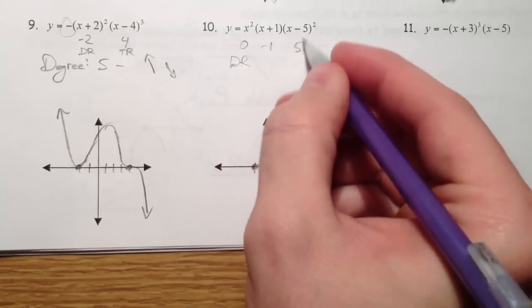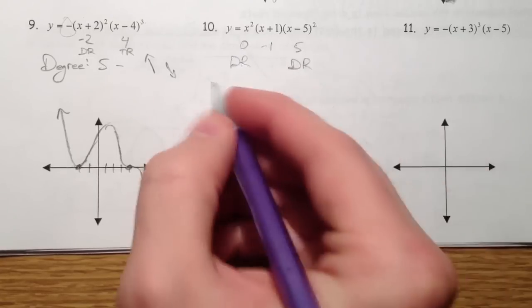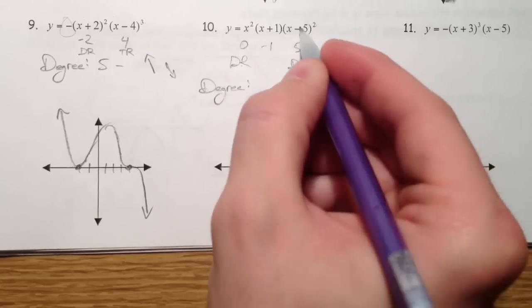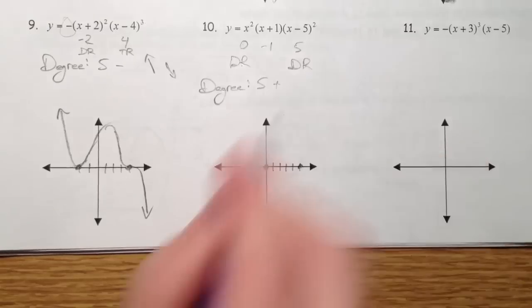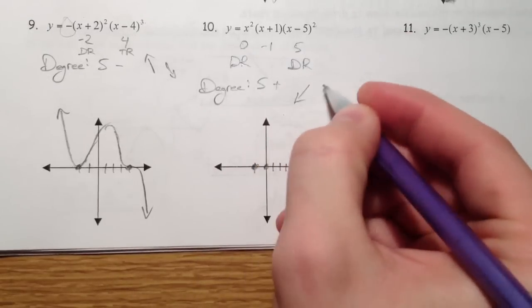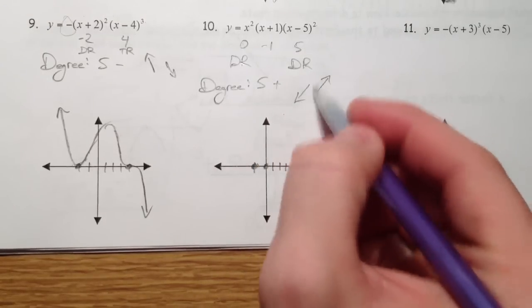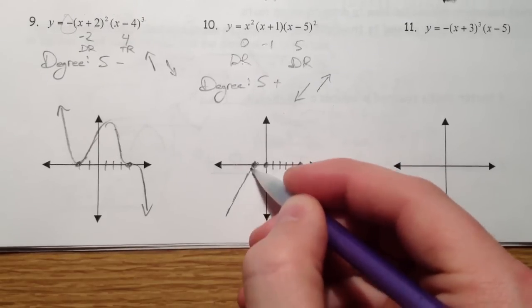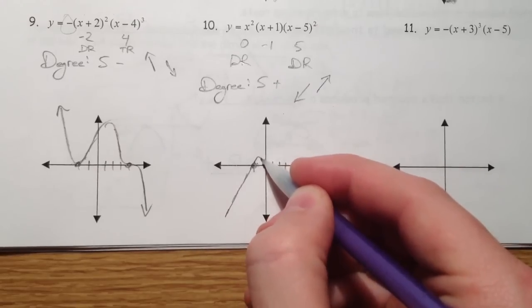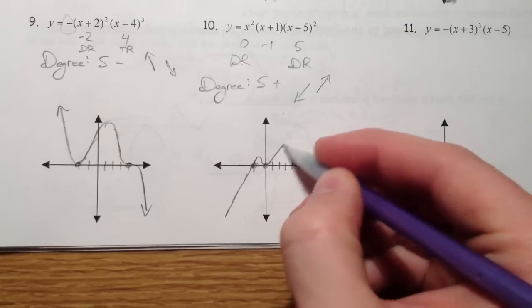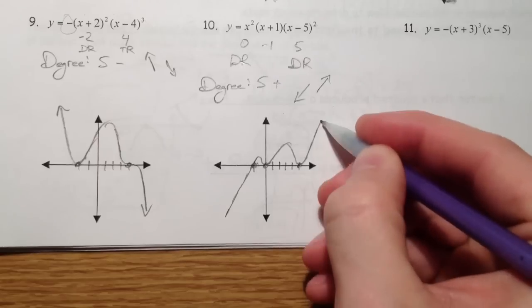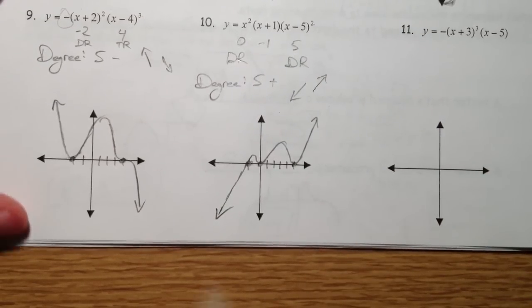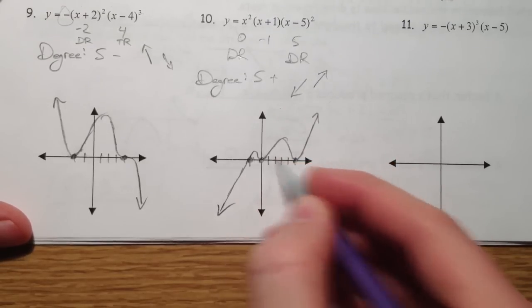At zero it's a double root and at five it's a double root. The degree is one, two, three, four, five, and it's positive — so it's going to be like a positive odd degree function. It's going to come from the bottom, do a bounce at zero, and do a bounce at five. I went up a little higher here because there's more space in between, but in actuality these are going to grow a lot faster in between.